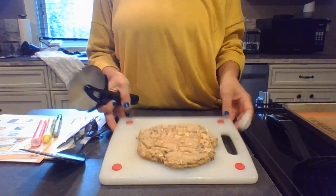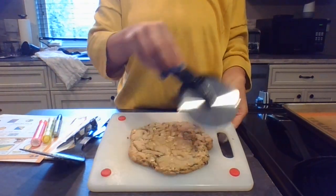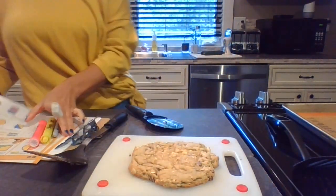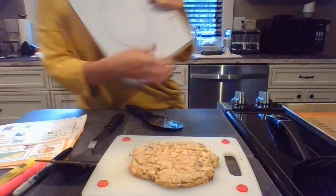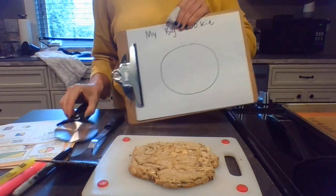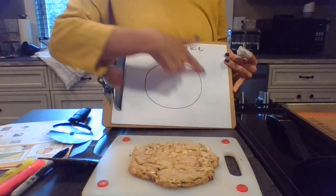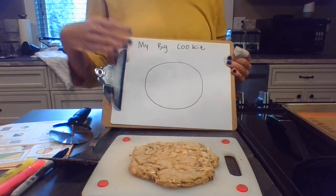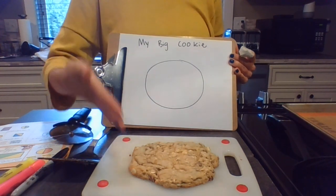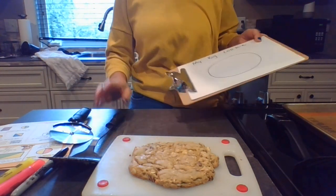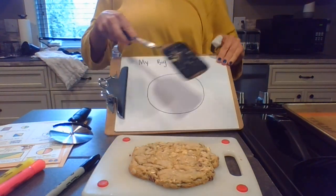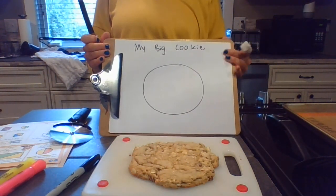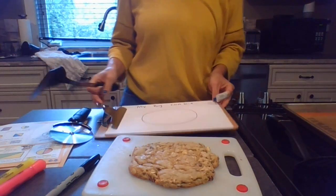Here is my one giant cookie. I also have here a piece of paper of my one big cookie. So let's pretend this and this are the same thing — this is real life, this is paper. This is called one whole. It's a whole cookie. Nobody has taken any bites yet. There's no pieces gone.